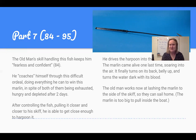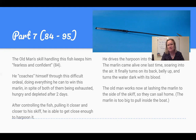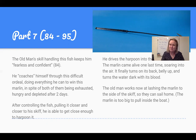Eventually the fish starts to tire out. Slowly, Santiago applies pressure to the line and pulls the fish in towards his skiff. The marlin circles the boat a few times, getting closer and closer, until he's close enough to drive the harpoon into it. The harpoon goes through its heart, there's a lot of blood, and eventually the fish dies. Now he has to tie the fish to the boat — it's too big to fit inside — and he's going to sail home with his incredible treasure.